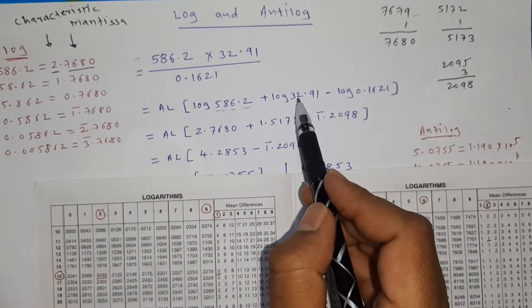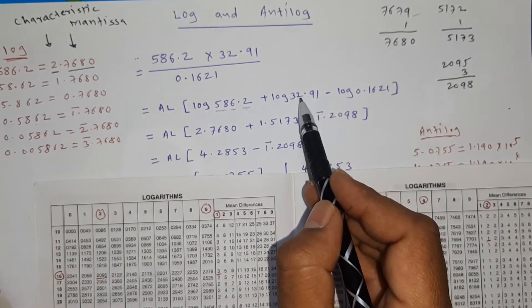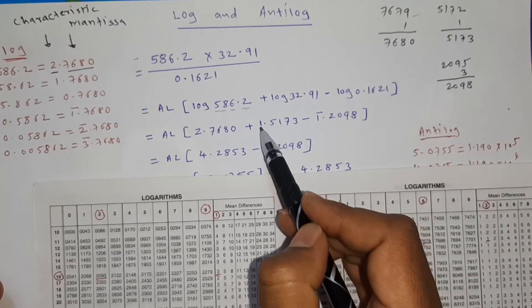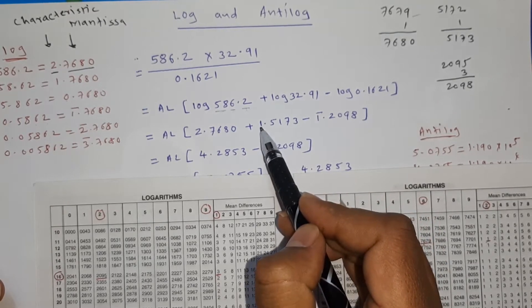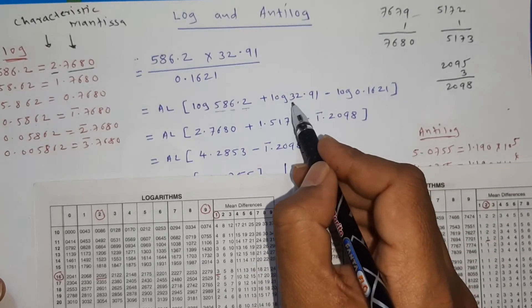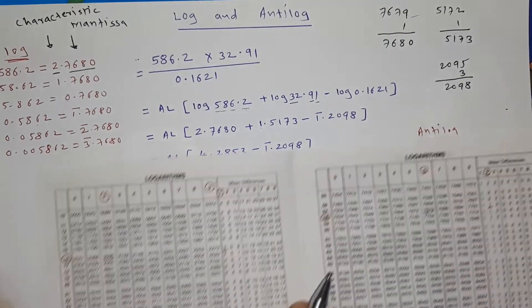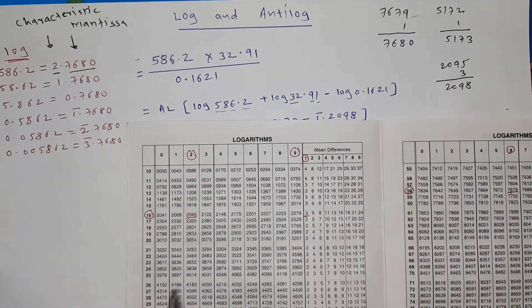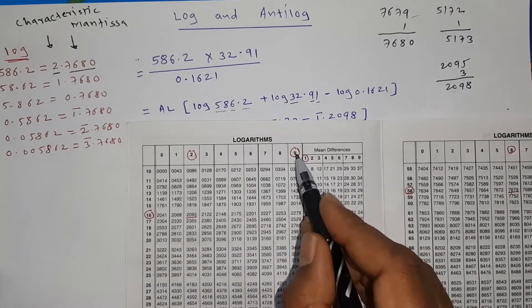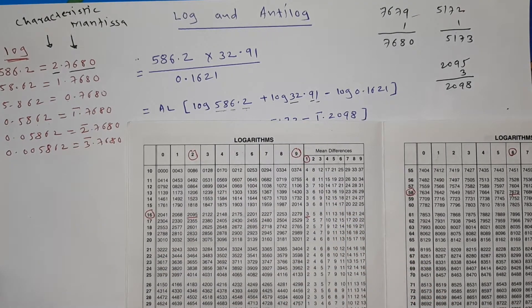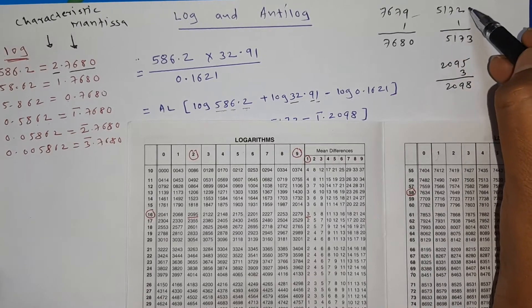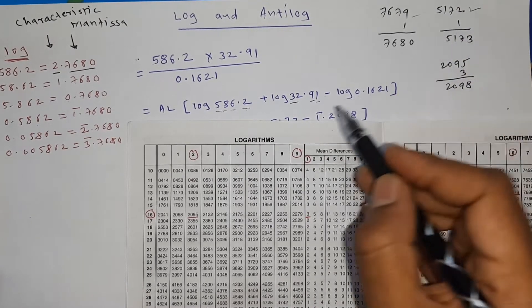Now for 32.91: before the decimal we have two digits, so 2 − 1 = 1 is the characteristic. To find the mantissa, look up 32 in the log table, then the third digit is 9. I already did the marking — row 32, column 9 gives 5172. The fourth digit is 1, so we check the mean difference column for 1.